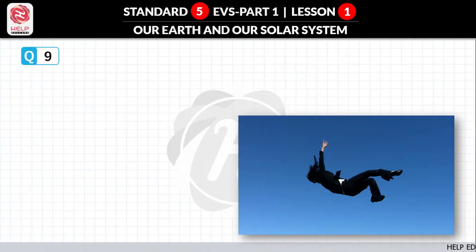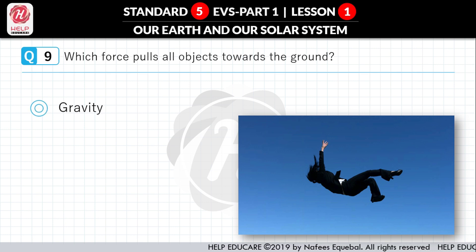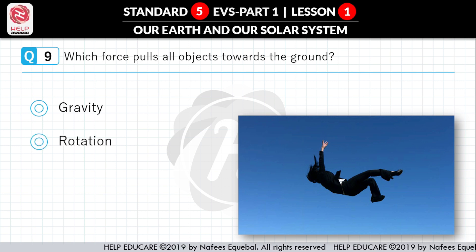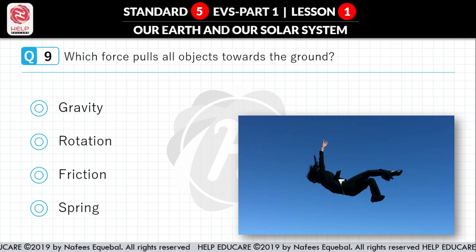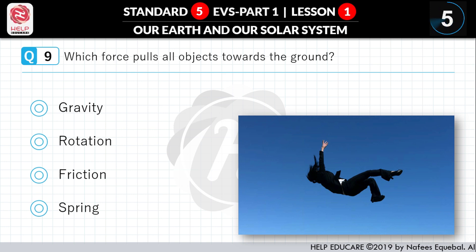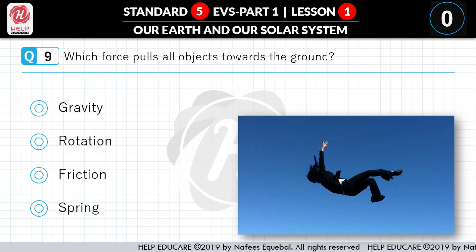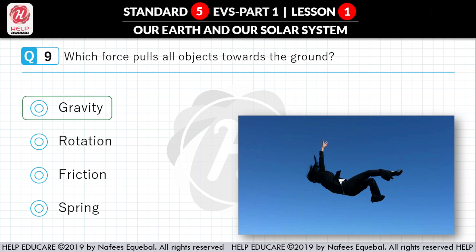Question No. 9: Which force pulls all objects towards the ground? First option: gravity. Second option: rotation. Third option: friction. Fourth option: spring. Correct answer is Gravity.